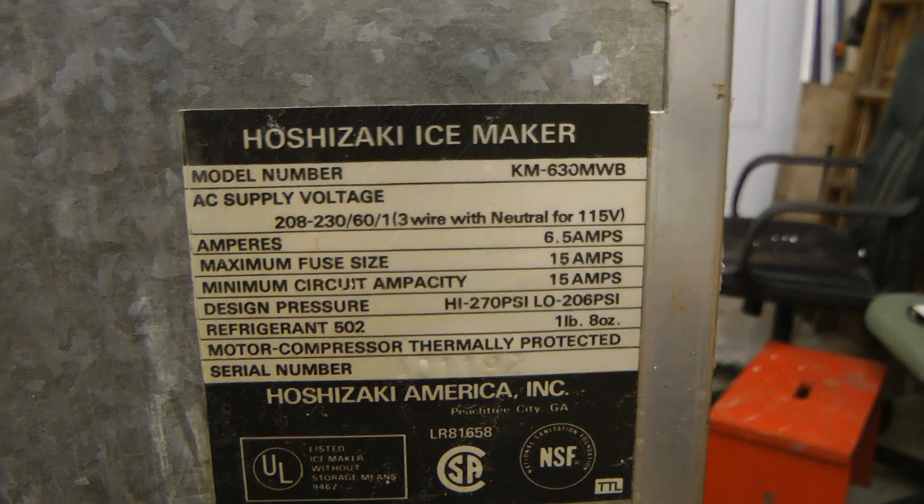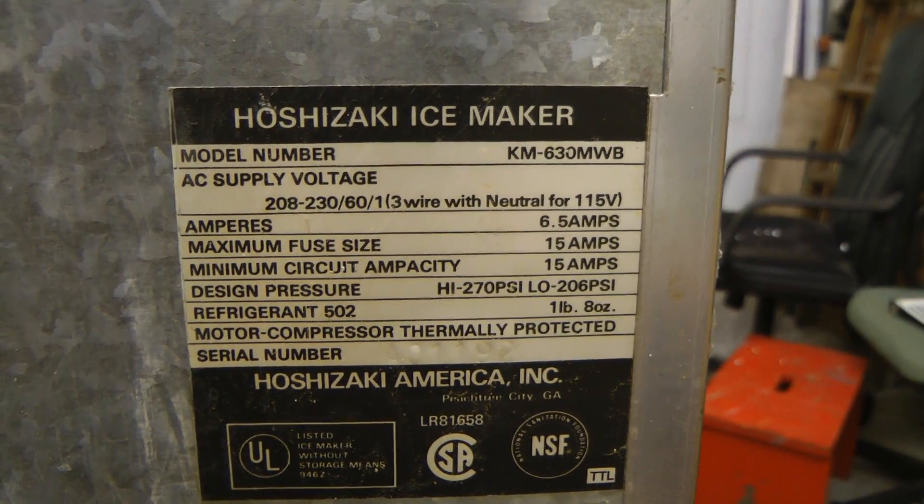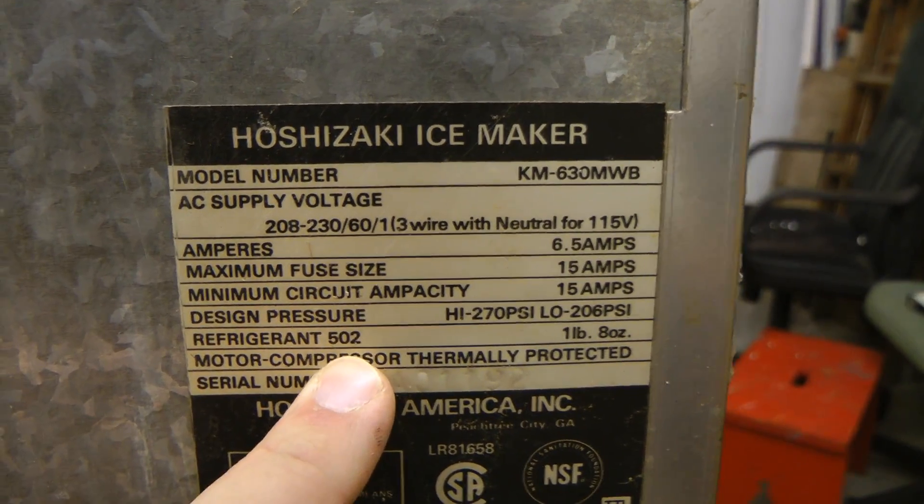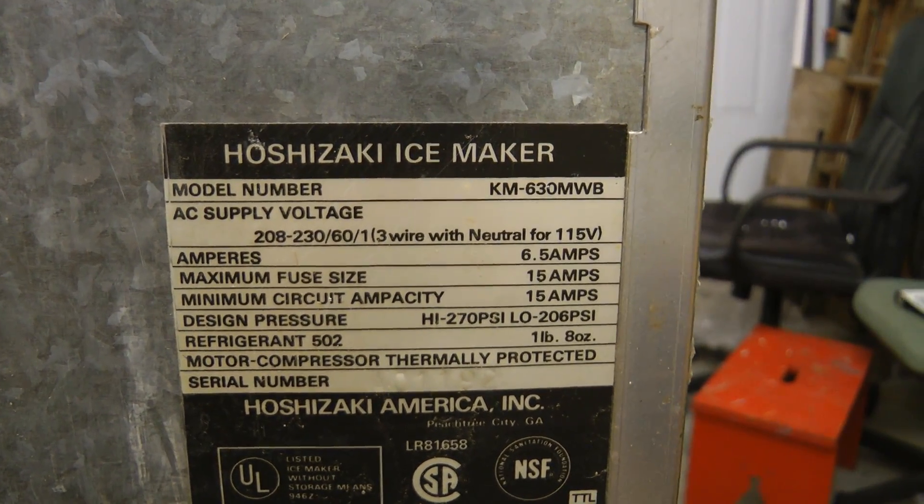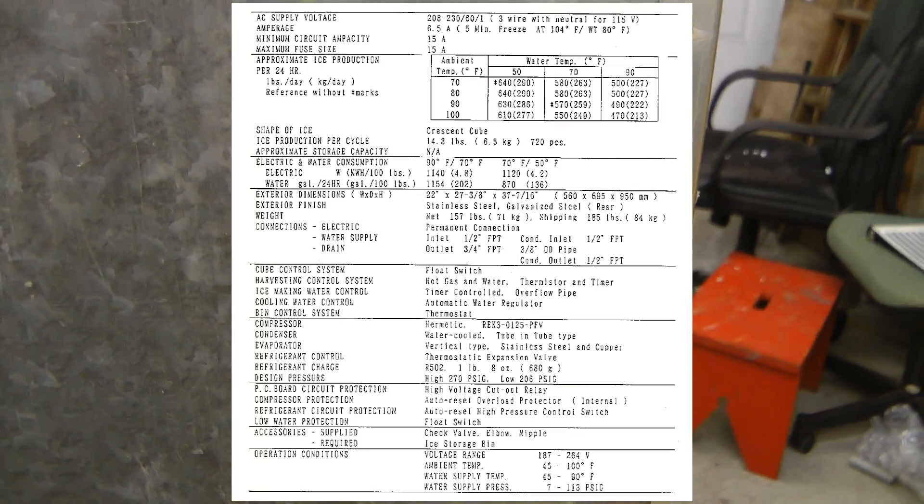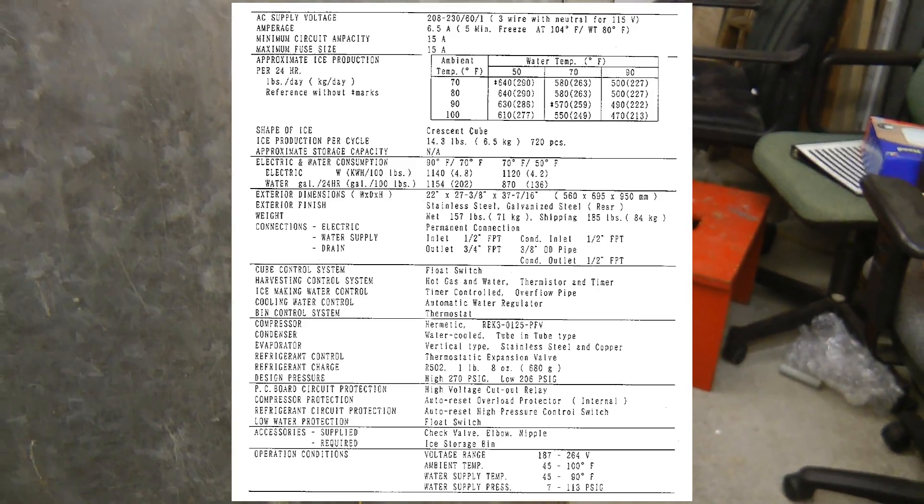According to the ratings panel this runs on 208 or 230 volts at 6.5 amps, so not a huge amount of power. It uses R502, although according to a note elsewhere in the system that's been changed to a different refrigerant. According to the manual this produces 290 kilograms of ice per day or a little bit less depending on the ambient temperature.